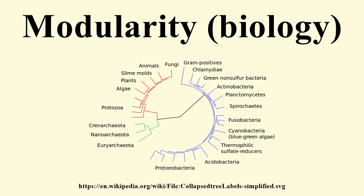The exact evolutionary origins of biological modularity has been debated for over the past decade. In the mid-90s, Gunter Wagner argued that modularity could have arisen and been maintained through the complex interaction of four potential evolutionary modes of action.